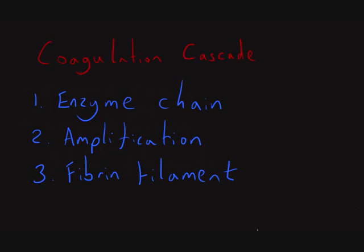Let's talk about the coagulation cascade. It's an enzyme chain whose purpose is to produce the fibrin filament, which is the important part of stabilising that initial platelet plug into the stable fibrin clot — which is going to be there whilst the vessel wall is repaired. The important part of the coagulation cascade is that it's the amplification of a very small initial trigger that has stemmed from vessel wall injury, and that needs to be amplified up to form enough fibrin filaments to actually produce a stable fibrin clot.